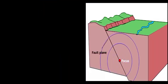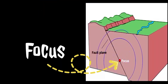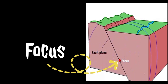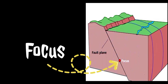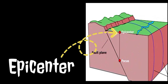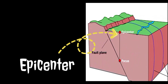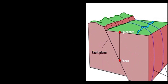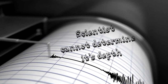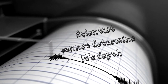The earthquake occurs at the focus. This is a zone within the Earth where rock displacement happens and causes an earthquake. The point directly above the focus is called the epicenter. This is the location that scientists calculate, while the focus is directly below. However, scientists cannot determine its depth.